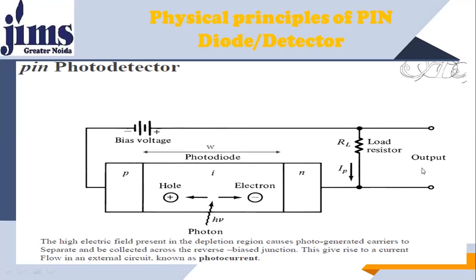In this way, you get an output which is an electrical quantity, and the input is the incident optical energy. The photonic energy hμ is converted into an electrical signal. So in this way, the PIN photodetector converts light energy into an electrical signal at its output.